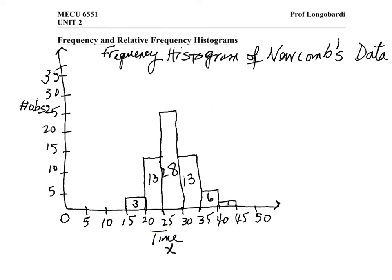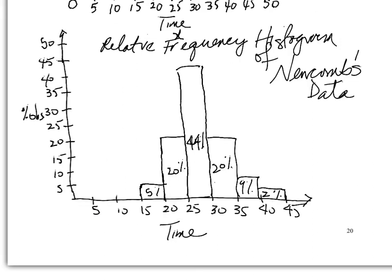All right, next would be to make the relative frequency histogram. And here it is, the relative frequency histogram of Newcom's data. I've put the percentage of observations on the vertical axis, and that's what the bars represent. And I've included the percentages total in each bar. And we can say that overall, in all of the bars, the bars sum to a total of 100%.